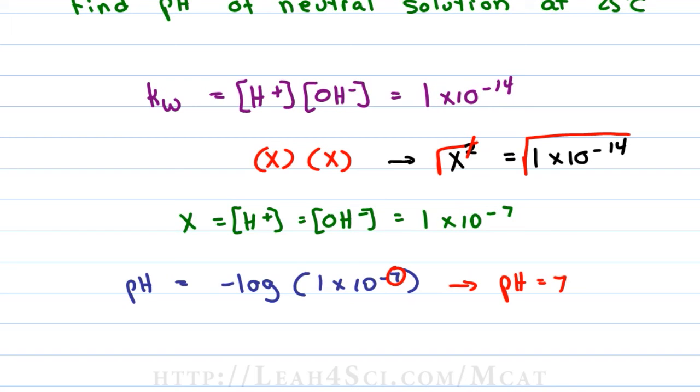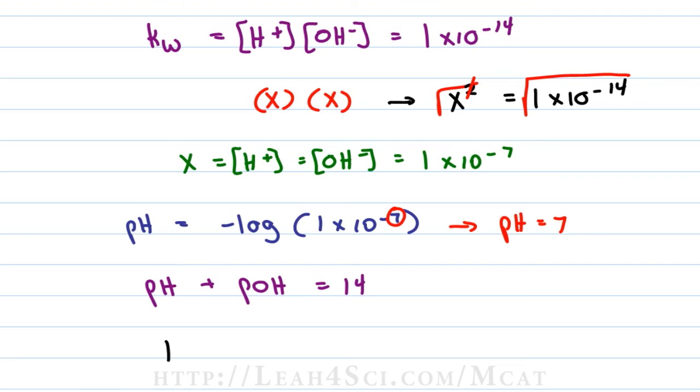Now if we want to use this to find the pOH, we simply set up pH + pOH is equal to 14. Rewrite this equation using what we know: 14 minus the pH equals the pOH, and 14 minus 7 is equal to 7.